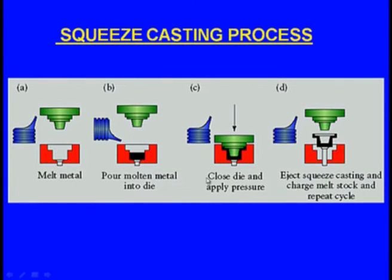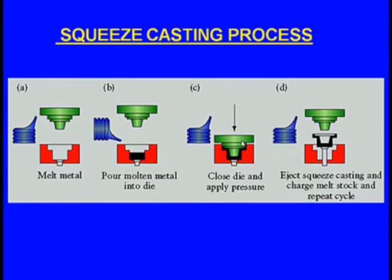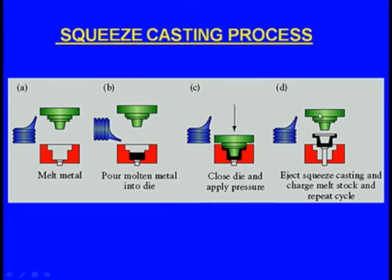But because we are applying external pressure by means of the ram while the metal is still in the molten state, all the thin fins and complex details will be filled by the metal. After solidification, the ram comes up and the solidified casting is ejected. This is the simple principle of squeeze casting. It is known that we get better mechanical properties — similar to forging — because we apply mechanical pressure. The advantages include: parts with fine details can be produced because the applied pressure forces molten metal into fine features.